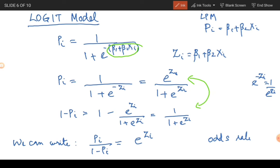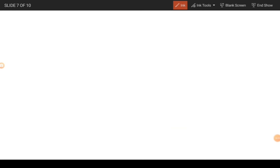The odds ratio in favor of your dependent variable taking the value of 1. So in our example, P_i by 1 minus P_i will be the odds ratio in favor of owning the house in which you are living in. The odds ratio, P_i by 1 minus P_i, in favor of owning the house, can be written as e to the power z_i.